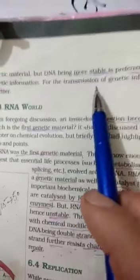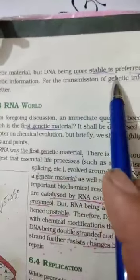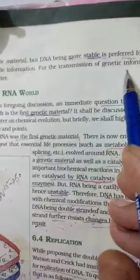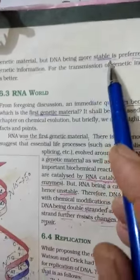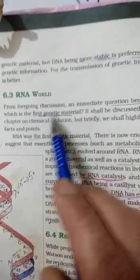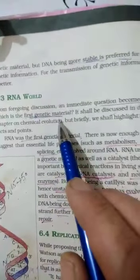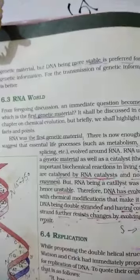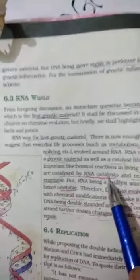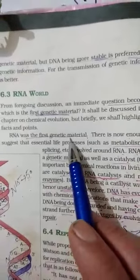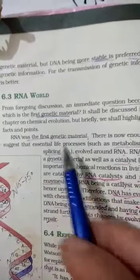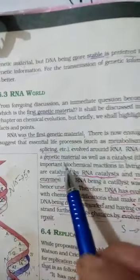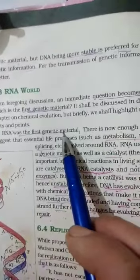In the previous topic, we had concluded that DNA is more stable and preferred for the storage of genetic information, and RNA is preferred for transmission of genetic information. But this raises the question: which is the first genetic material? To get the answer, we need to see all the processes in which RNA is involved. It has been concluded that RNA is the first genetic material.